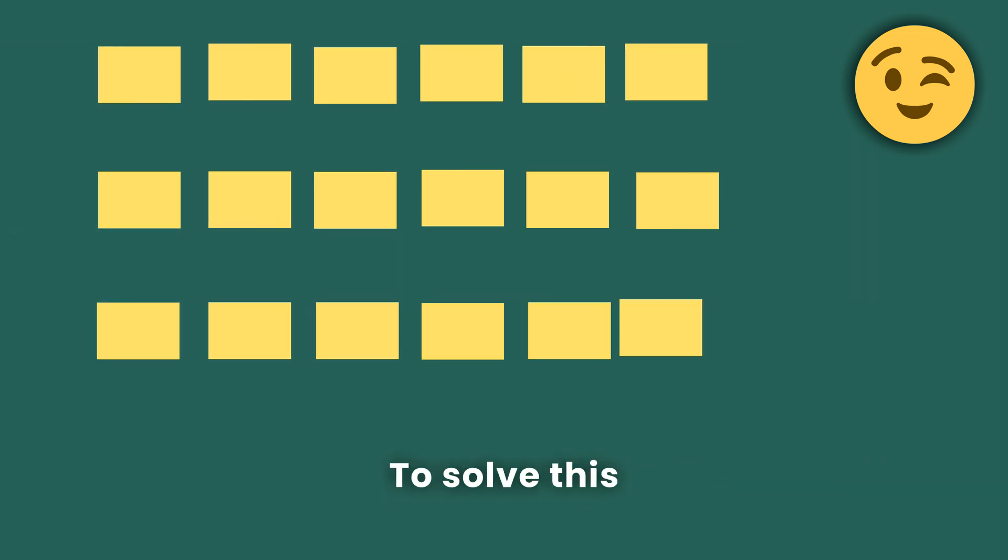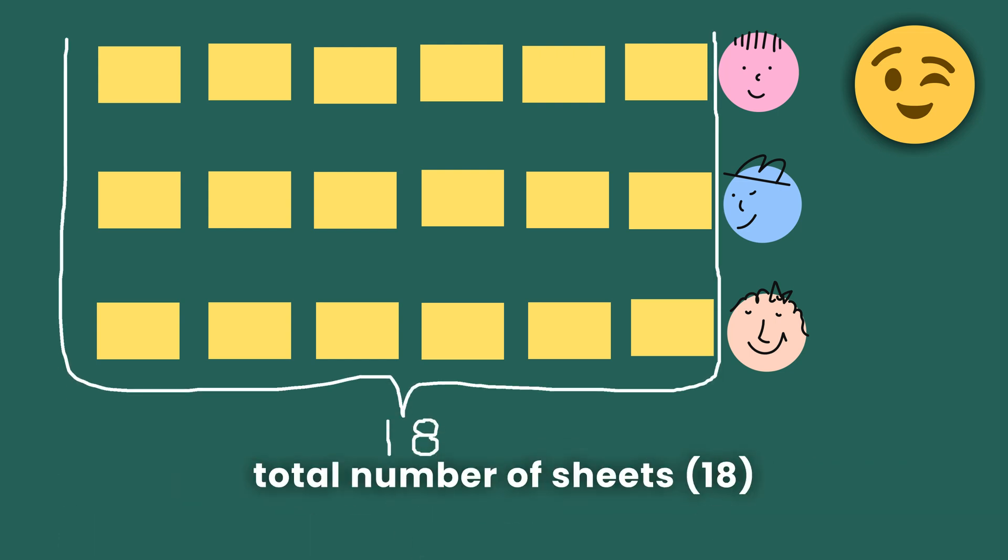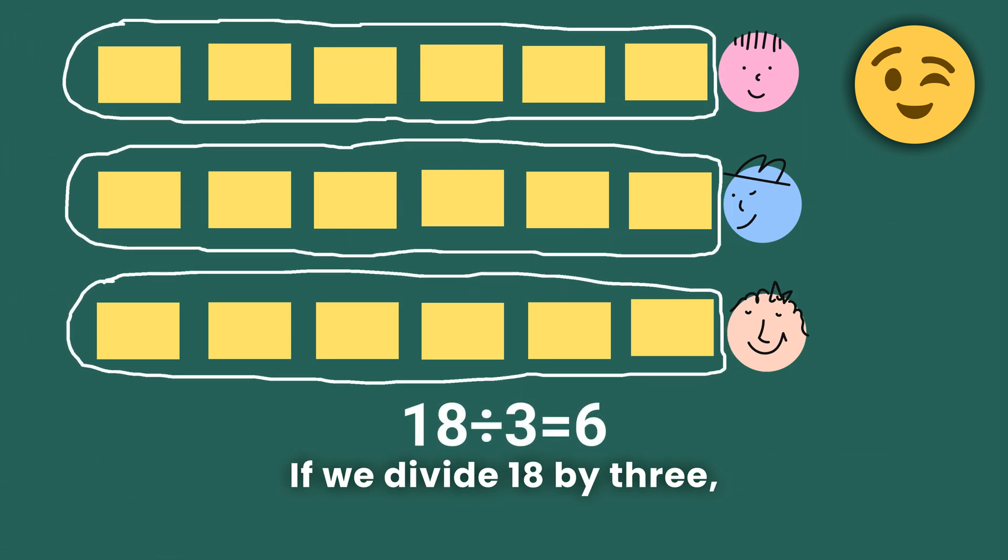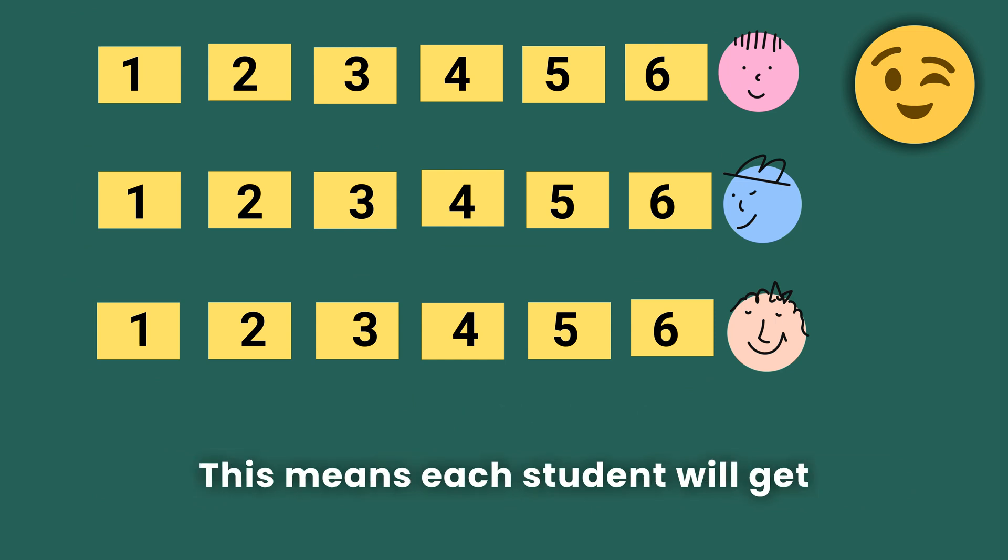To solve this, think about dividing the 18 sheets of construction paper equally among the three students. We can do this by taking the total number of sheets, 18, and splitting them into three equal groups. If we divide 18 by 3, we get 18 divided by 3 equals 6. This means each student will get six sheets of paper.